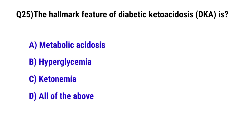Question No. 25: The hallmark feature of diabetic ketoacidosis is — the correct option is D: all of the above.